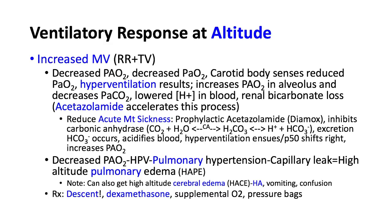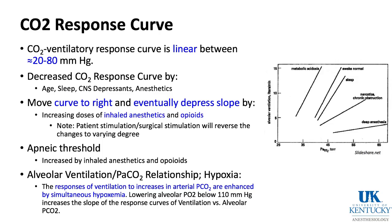The CO2 response curve: between PaCO2 of about 20 and 80, there is a linear relationship — as CO2 rises, ventilation increases. This curve is shifted by anesthetics. As a patient is deeply anesthetized with narcotics and inhaled agents, the curve shifts down and to the right, so more CO2 is needed to produce the same ventilatory response. Surgical stimulation shifts it back up and to the left.